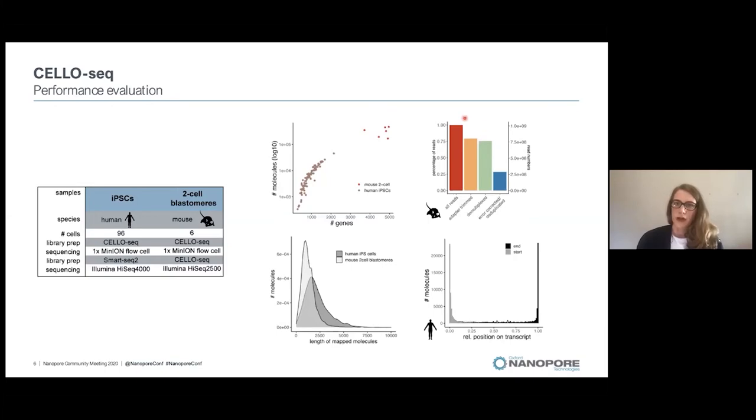In total, we have around 10 million reads per flow cell, of which 75% have both adapters and can be demultiplexed. 25% of reads are left after error correction and deduplication. The read length of the transcripts is 2,000 to 2,500 base pairs, and we are able to get full-length transcripts.